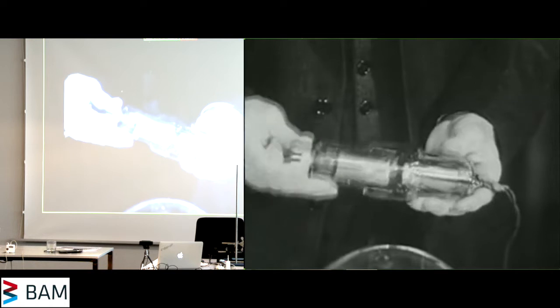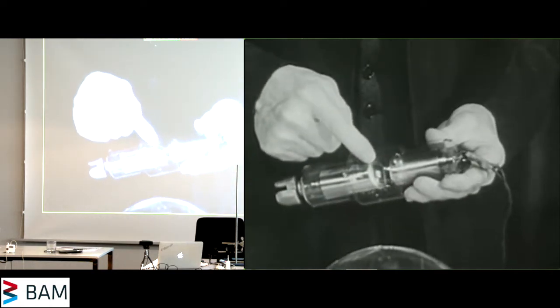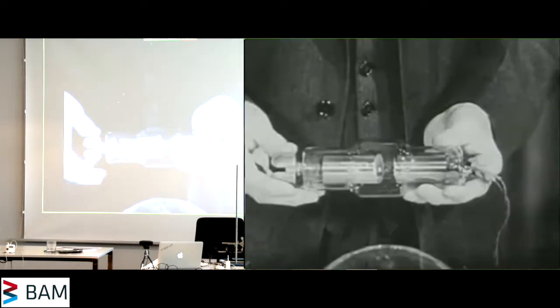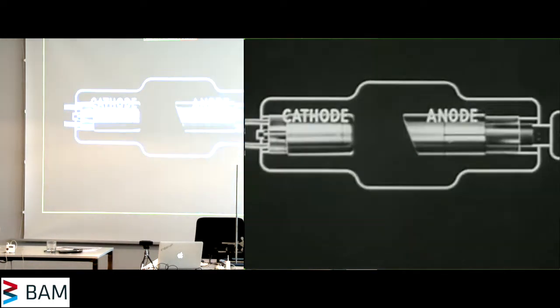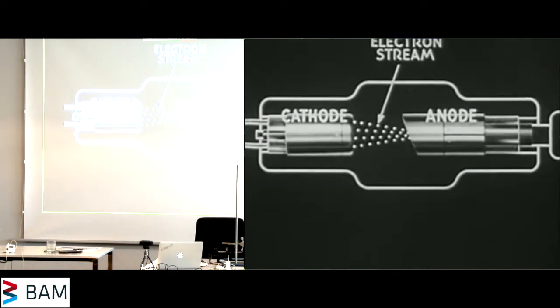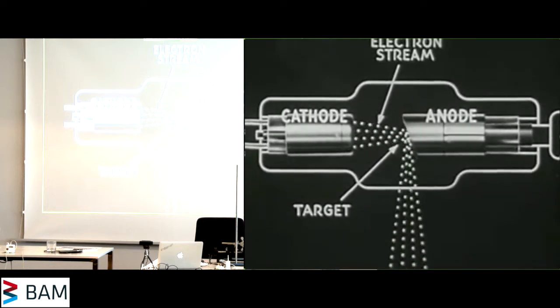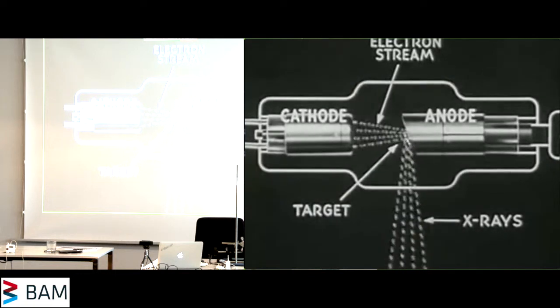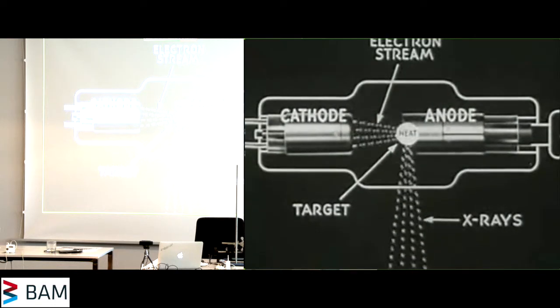The electron stream is focused to a very small spot on the target by the cup-shaped cathode structure. It seems that the electron stream striking the target at terrific velocity is stopped so violently that the electromagnetic radiation known as x-rays is produced. The efficiency of x-ray production is very low, and most of the energy of the electron stream goes to heat the target.